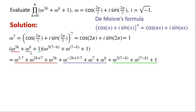Omega to the power of k times omega to the power of 7 minus k is omega to the power of 7. Omega to the power of k times 1 is omega to the power of k. And 1 times omega to the power of 3 times 7 minus k plus omega to the power of 7 minus k plus 1 is just itself.